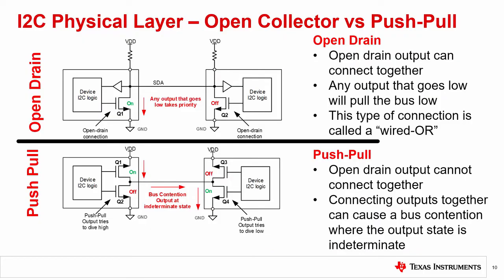One of the benefits of I2C using an open drain output is that bus contention will not put the bus into a destructive state. With an open drain output, many devices can be connected together. For any output on that connection, if either output pulls the line low, the line will be low. This kind of connection is called a wired-OR. The output is the logical OR of all the outputs when tied together.